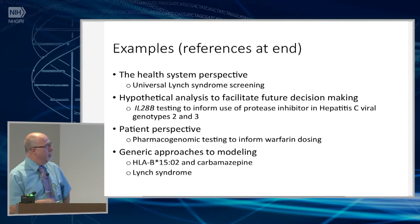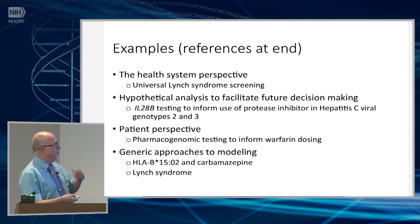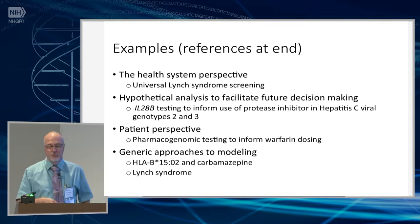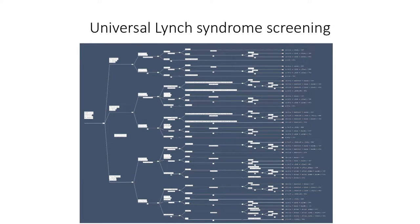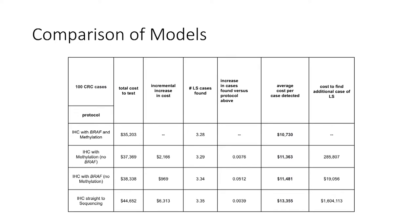I mentioned that trying to represent a real world example can be complex. This is one limb of a decision tree that we created when we were first starting to look at universal Lynch syndrome screening, looking at tumors. The actual full model took up the entire door of my modeler at about this font size. So pruning became extremely important, and it took us a little while to do it. When we ran this model from the perspective of our healthcare system, we believed the EGAP working group report that said there was sufficient evidence to do tumor-based screening, but it was silent on which way to do it or how best to do it.